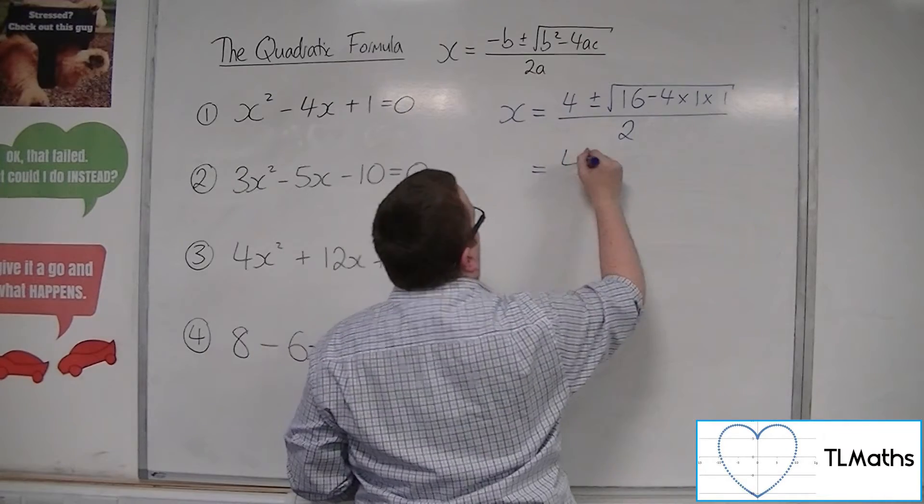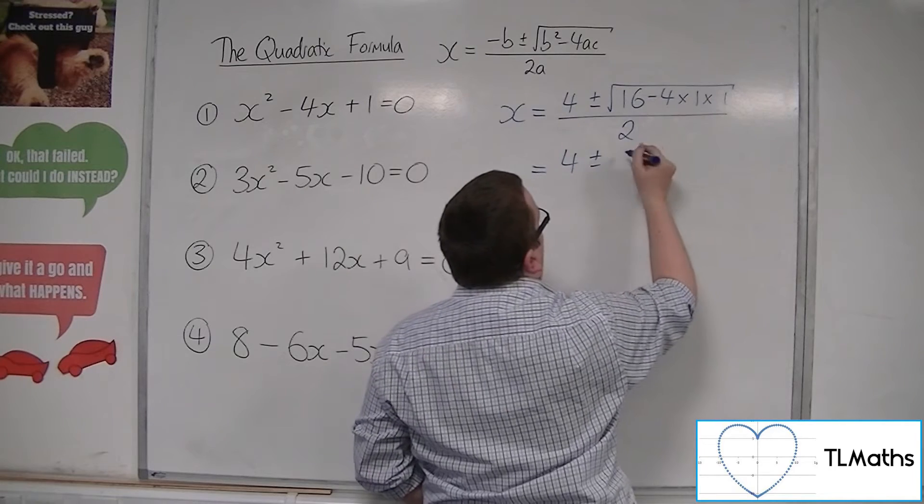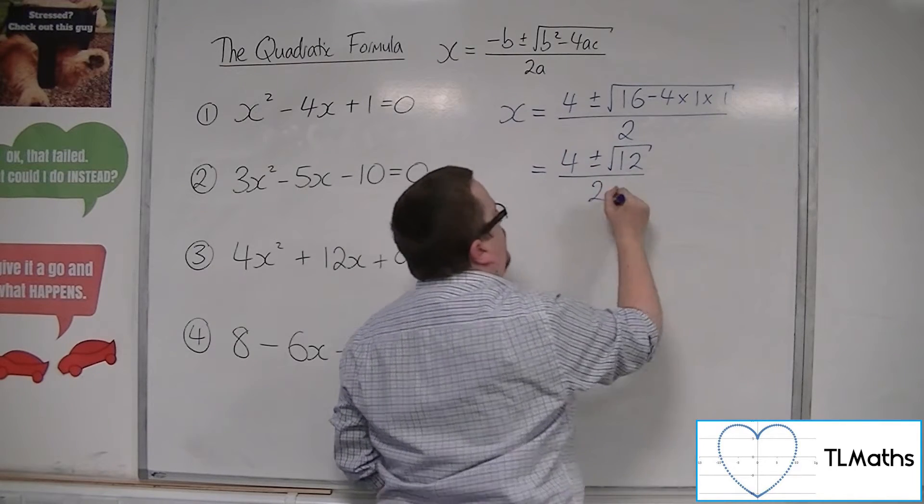So here we have 4 plus or minus, now 16 take away 4, so the square root of 12 all over 2.